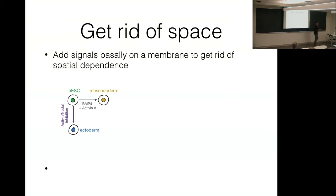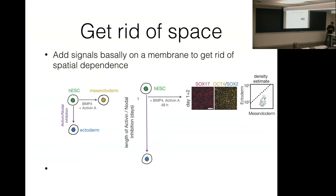Let's try to make the system respond homogeneously — add signal from the bottom so all cells see it. I take stem cells, open the gates. As soon as I open the gates, if I don't add any signal, cells by default become neurons — specifically forebrain neurons giving rise to cortical neurons. That's the default fate: don't add any signal, just let them go.